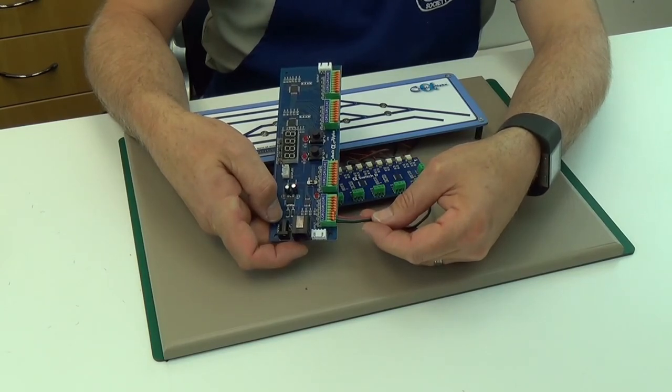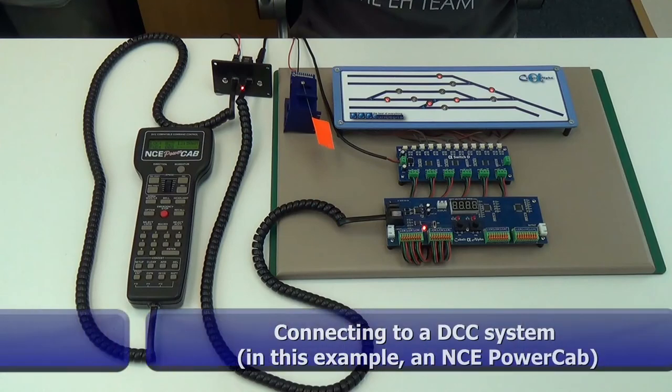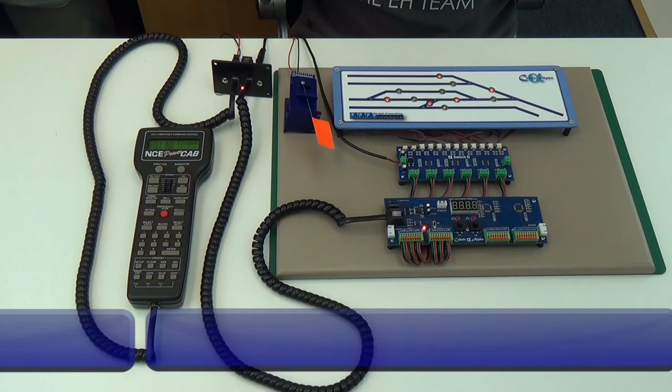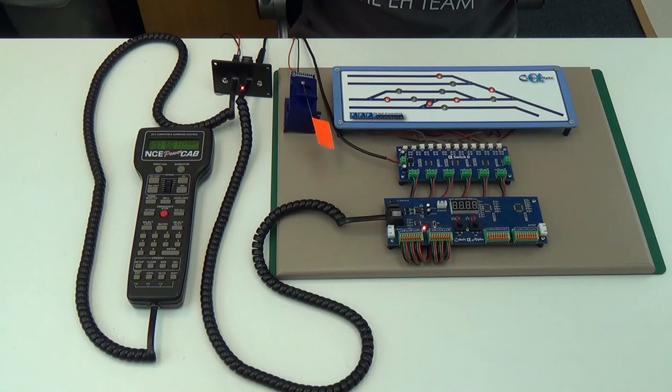The panel with its alpha switch and AEU is now connected to a DCC system. With an NCE system shown here, it just plugs into the DCC panel. Similarly, a DC user using the low-cost sniffer to create an accessory bus will follow this same procedure.